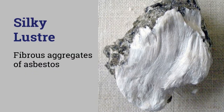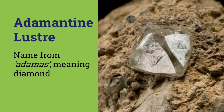The lustre of silk is rightly named the silky lustre and it is peculiar to the minerals having fibrous structures like gypsum and satin spar. Asbestos is also a fibrous aggregate and so it also has silky lustre. Adamantine lustre is simply the lustre of diamond and it is shown by minerals that have a high refractive index and reflect light strongly. This name is derived from the Greek word adamas meaning diamond. Other than diamond, some garnets and lead carbonate also have adamantine lustre.